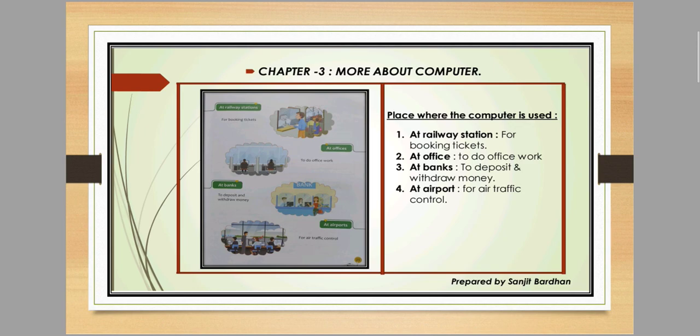Next is at the railway station — we can easily book our tickets by using a computer. Next is at office — to do office work. There are a variety of tasks in an office and we can easily complete this type of work using a computer.